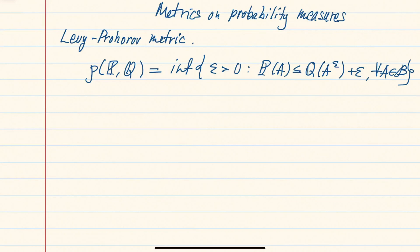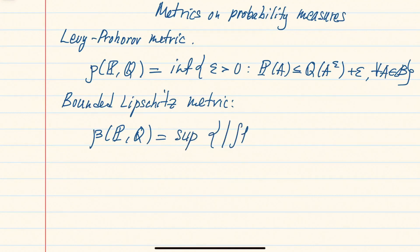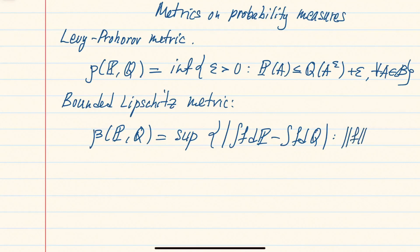The second metric we will consider is called the bounded Lipschitz metric. It is defined by taking a supremum of the difference between the integral with respect to probability P and the integral with respect to probability Q, over all bounded Lipschitz functions with bounded Lipschitz norm less than or equal to 1.